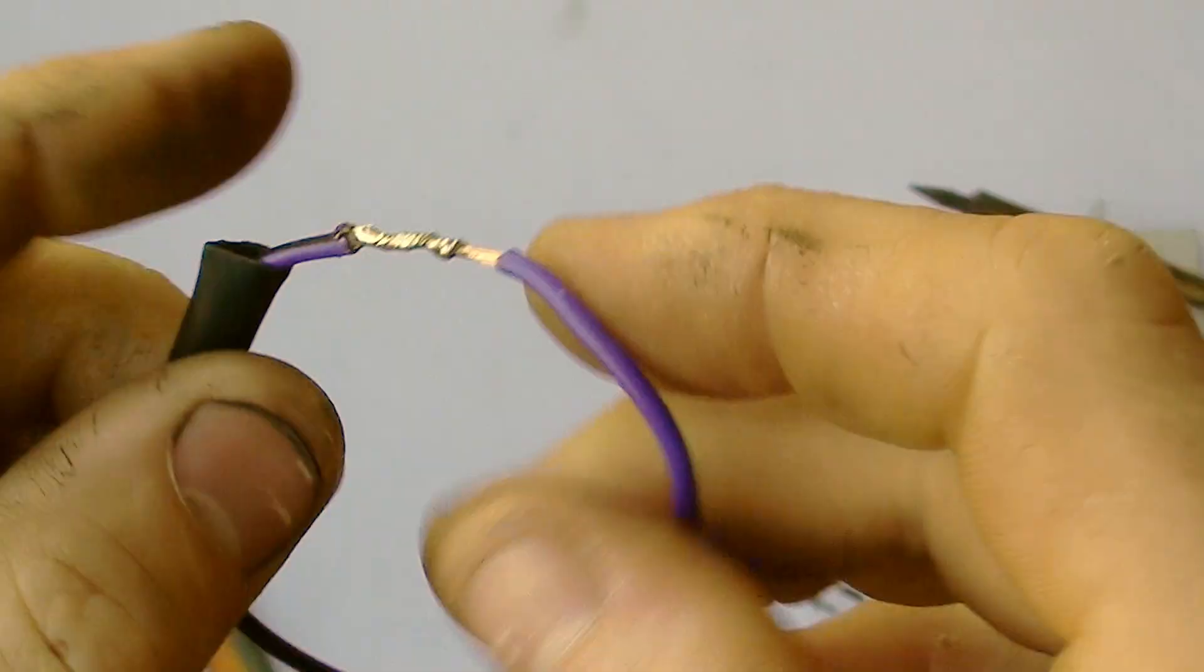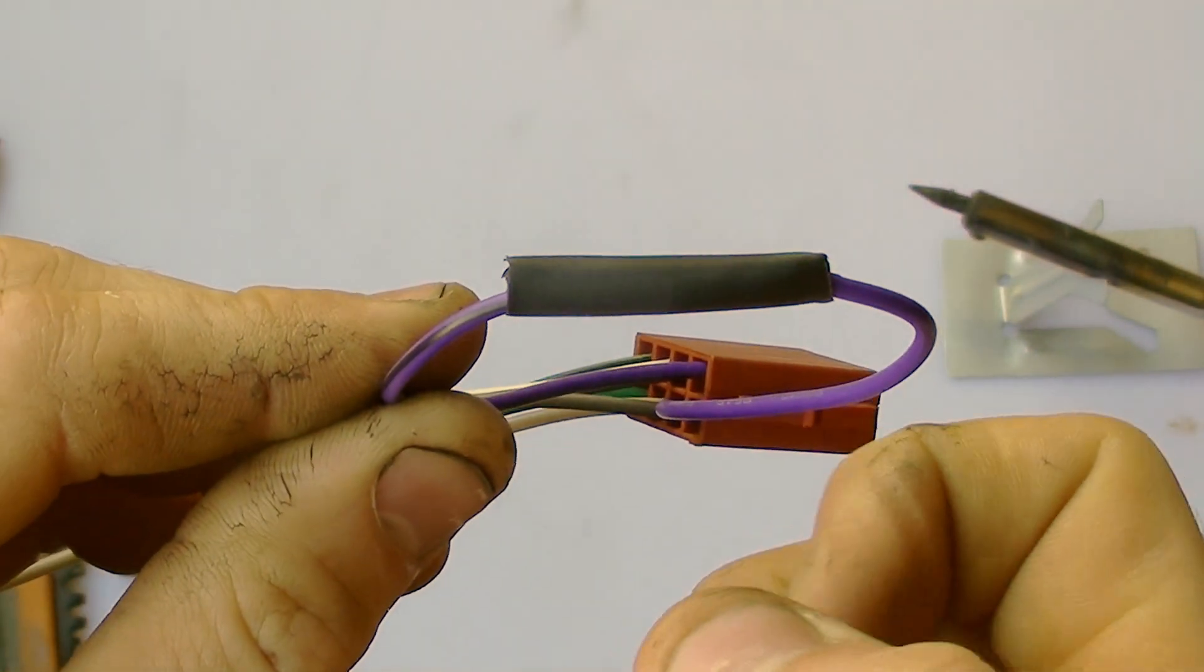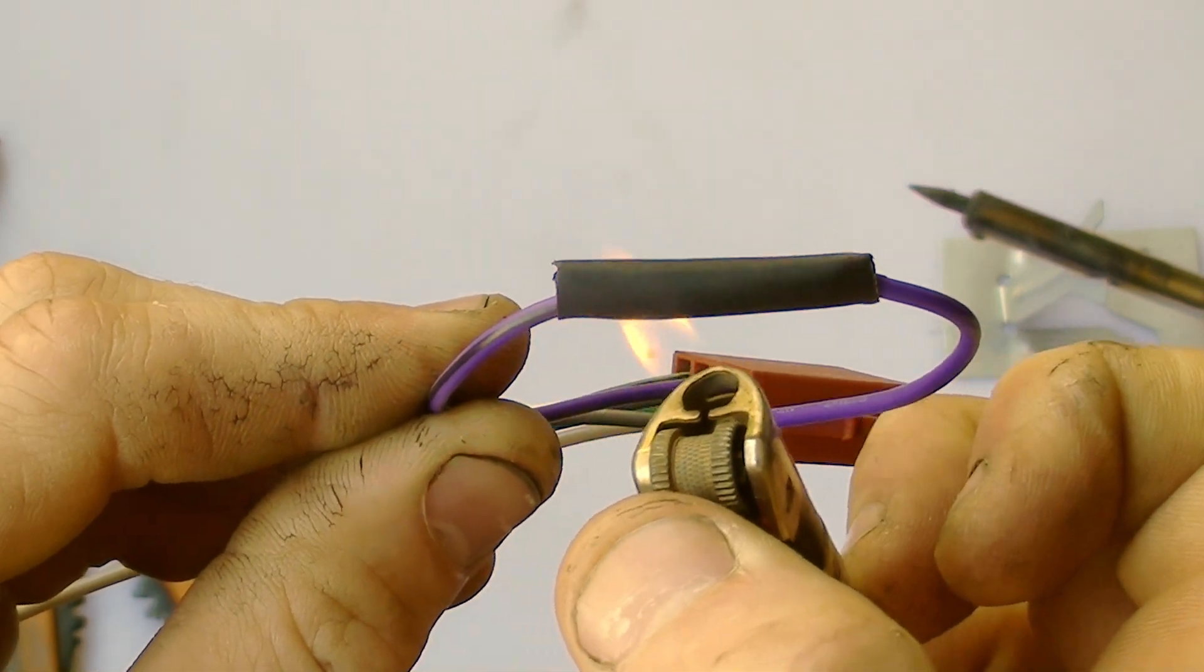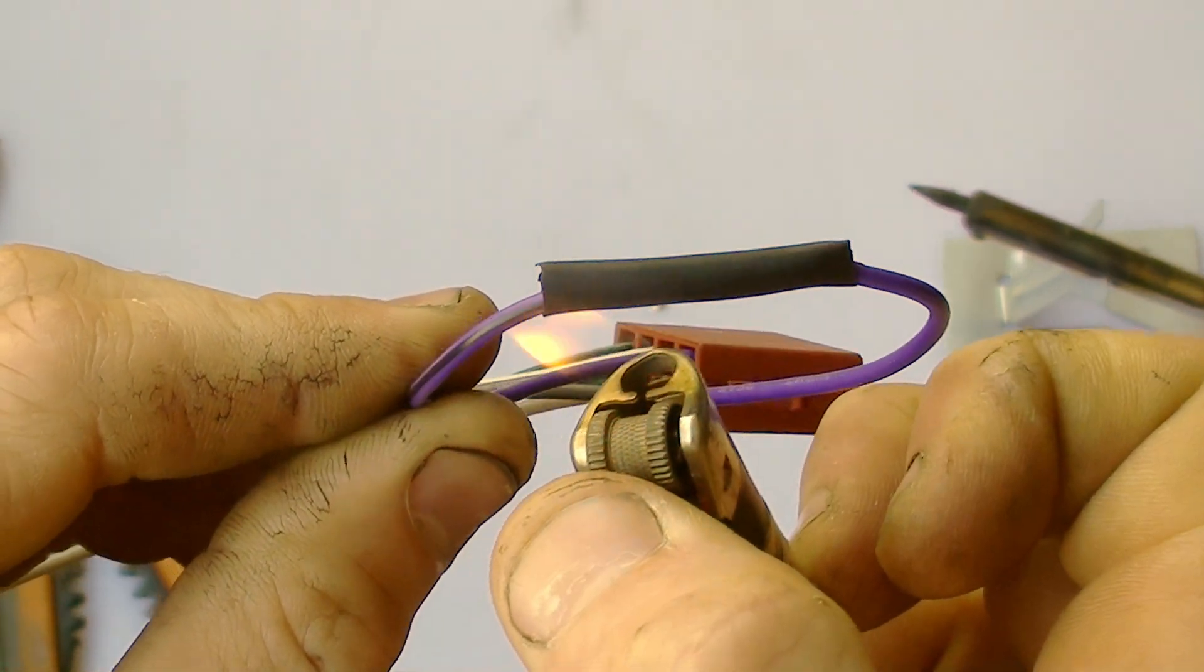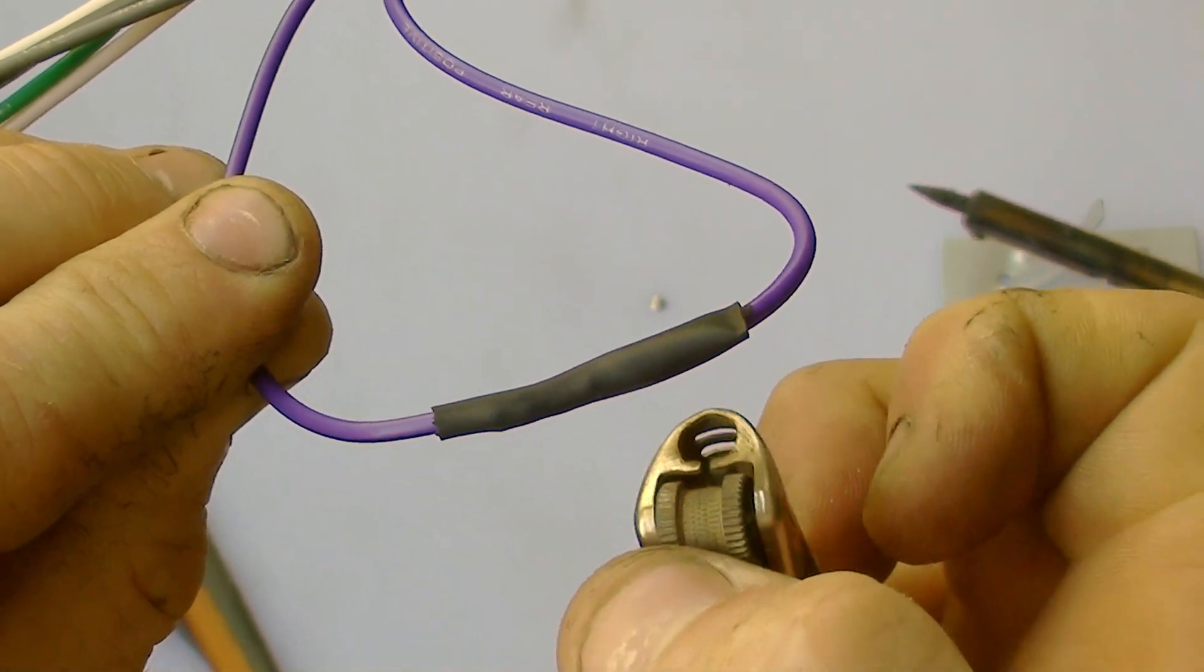We can put the heat shrink over just like so. We'll just grab the lighter we had before and then just evenly heat it. It's a bit windy today.